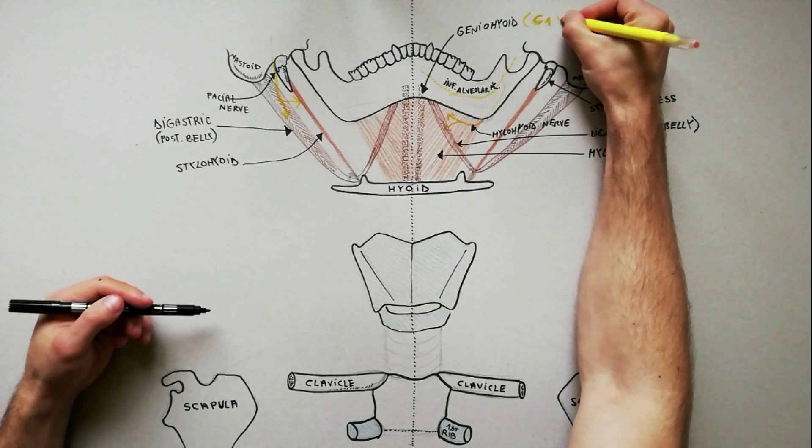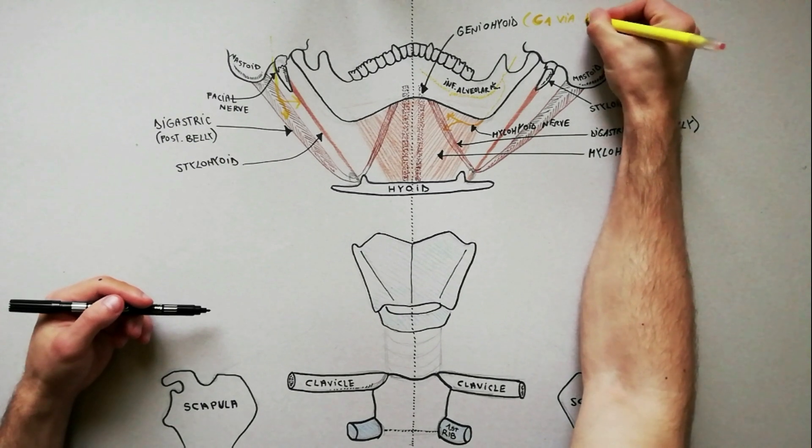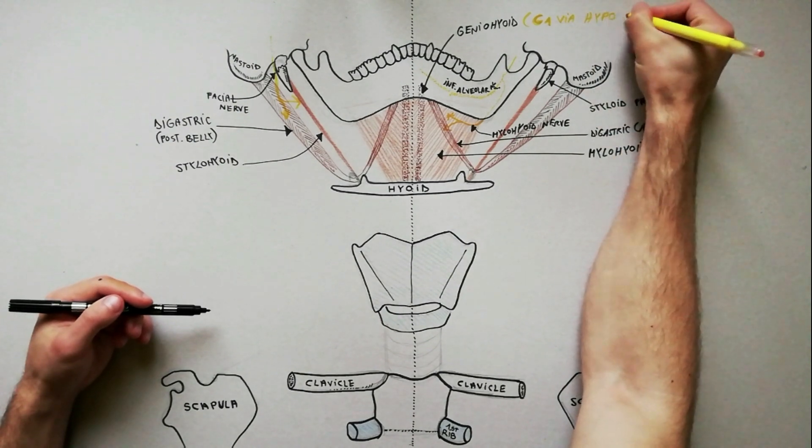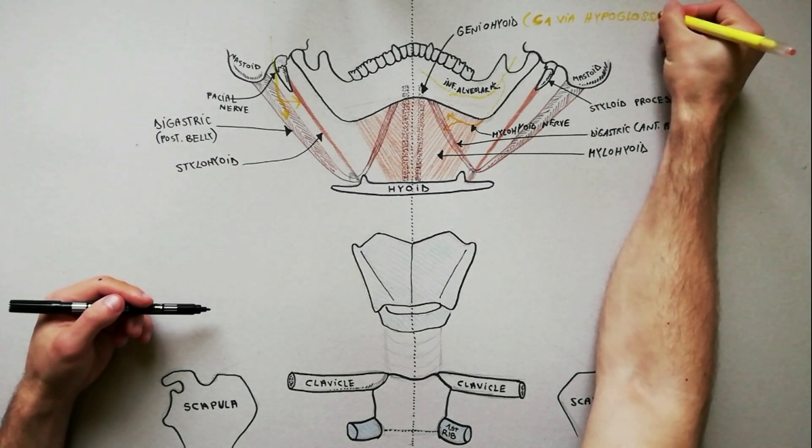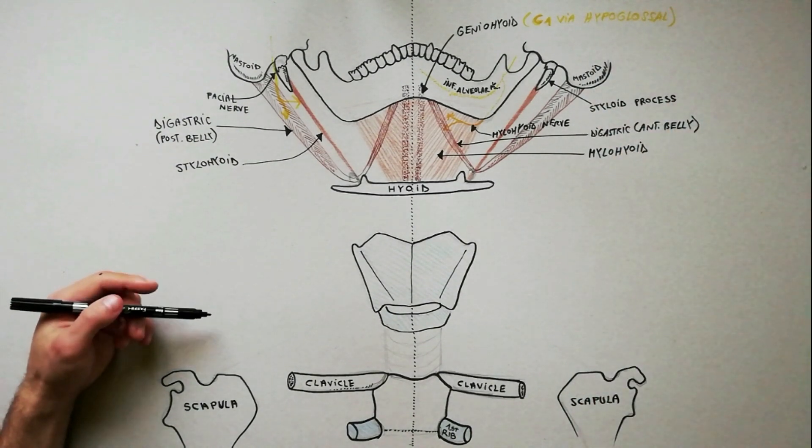The geniohyoid muscle is innervated by fibers from the C1 spinal nerve via the hypoglossal nerve.